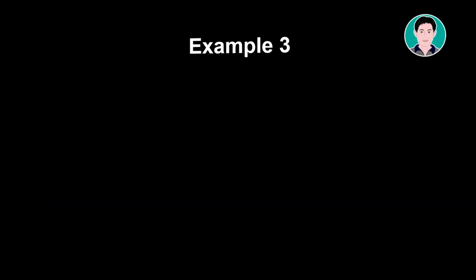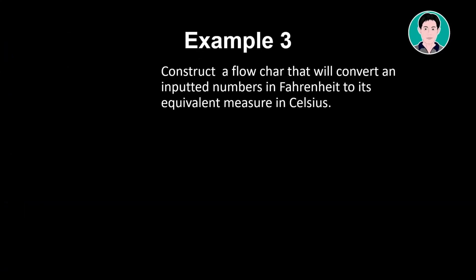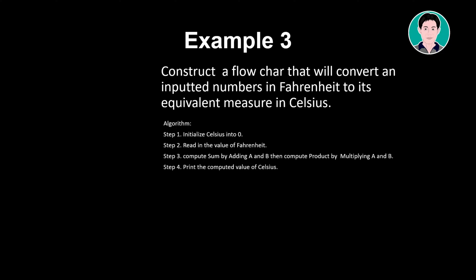Example 3. Construct a flowchart that will convert an inputted number in Fahrenheit to its equivalent measure in Celsius. Algorithm: Initialize Celsius to 0. Read in the value of Fahrenheit.